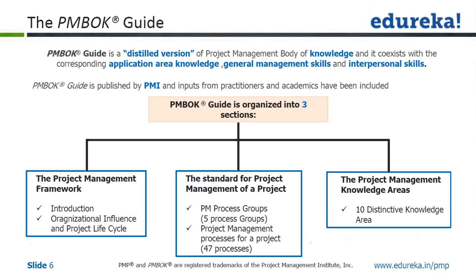There is an overlap between what the PMBOK Guide says with respect to your application area knowledge, your general management skills, and interpersonal skills. So they are not exclusive to each other — they don't stand alone. If you draw a few circles, they are intersecting with each other, and there will be certain overlap required to get your PMBOK-related 47 processes executed.